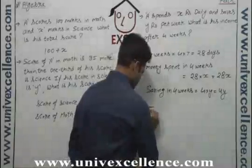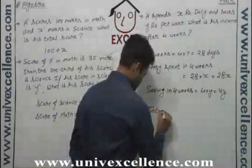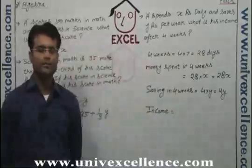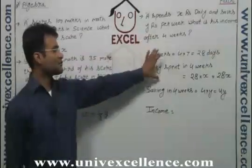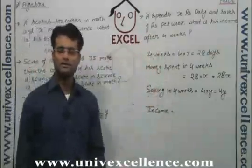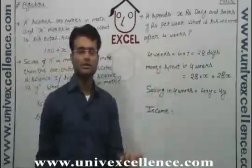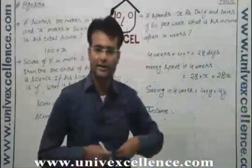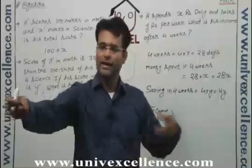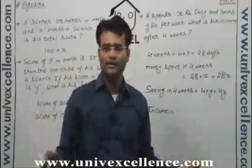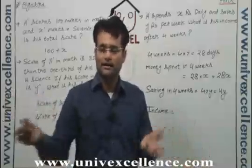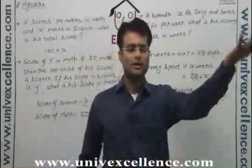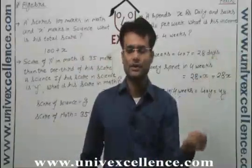So the income will be money spent plus money saved, because whatever you spend is part of your income — you get it first, then you spend it. And the saving which is left with you is also your income. Let's say you are getting hundred rupees as income.